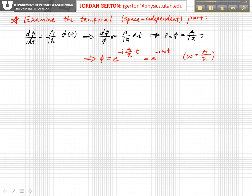We divide both sides by φ and multiply by dt, and we get dφ over φ is equal to A over iℏ dt. Now if we integrate this to find φ, we know that the integral of the derivative of a function divided by that function...